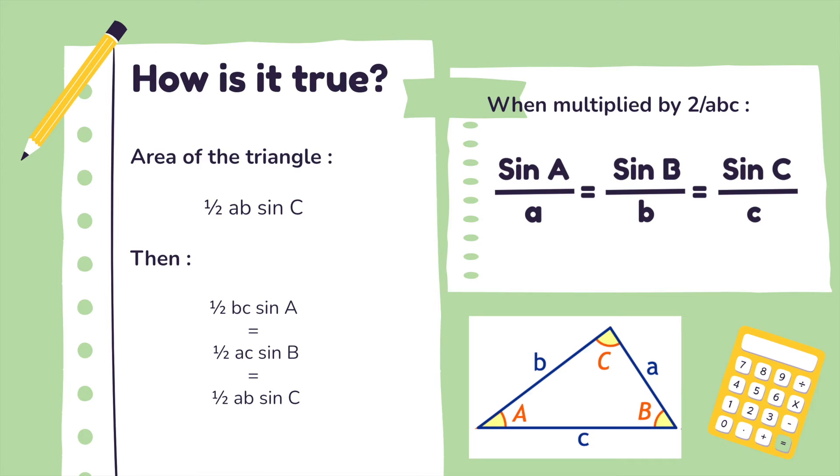Then, 1/2 bc sin A equals 1/2 ac sin B equals 1/2 ab sin C. When the equation is multiplied by 2 over abc, we will get the sine rule equation.